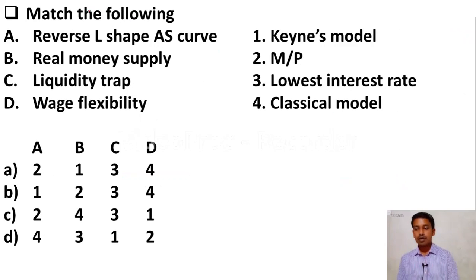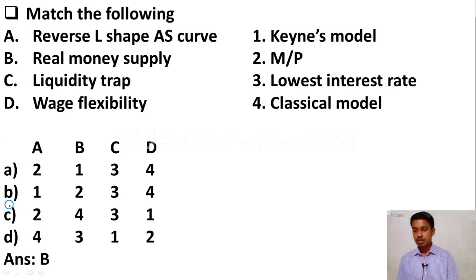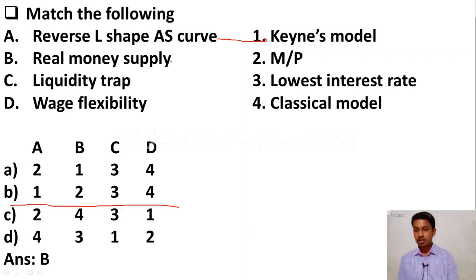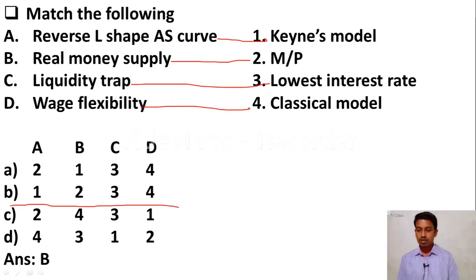Match the following: reverse L-shape AS curve, real money supply, liquidity trap, wage flexibility — with: Keynes model, M/P, lowest interest rate, classical model. Option B is the correct answer. Reverse L-shape AS curve is given by Keynes — it is the Keynes model. Real money supply is M upon P. Liquidity trap is due to the lowest interest rate. Wage flexibility is known as the classical model.